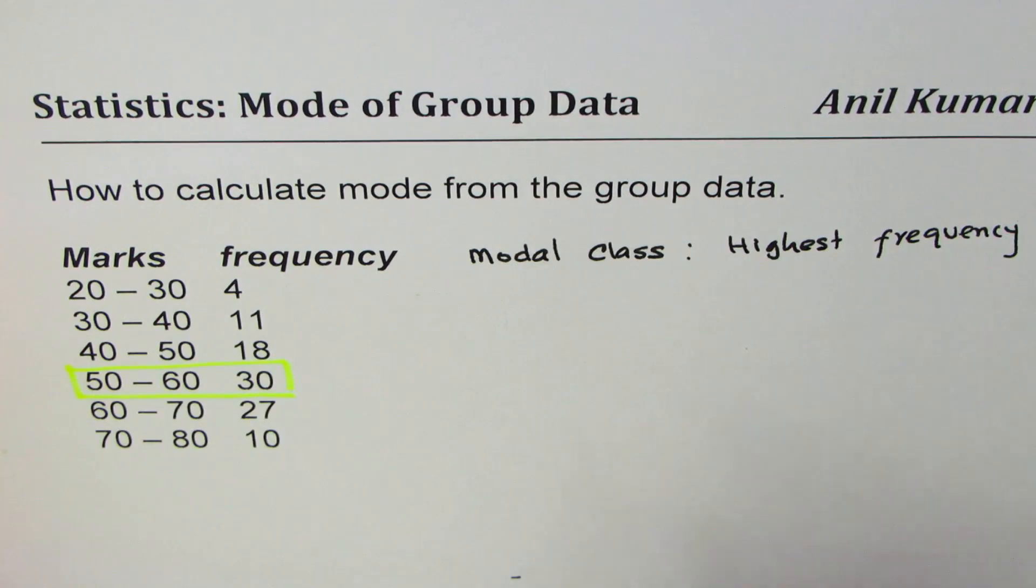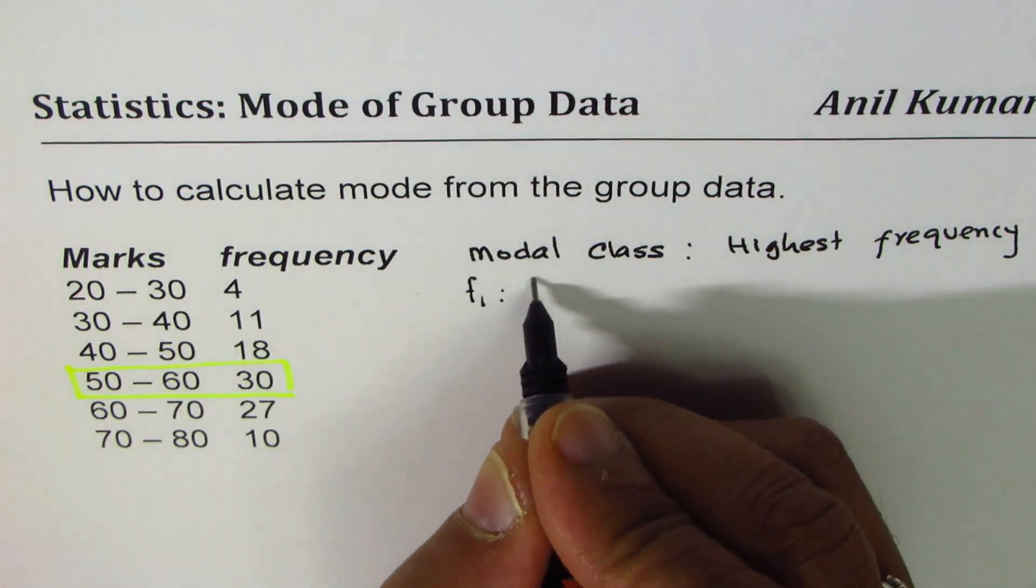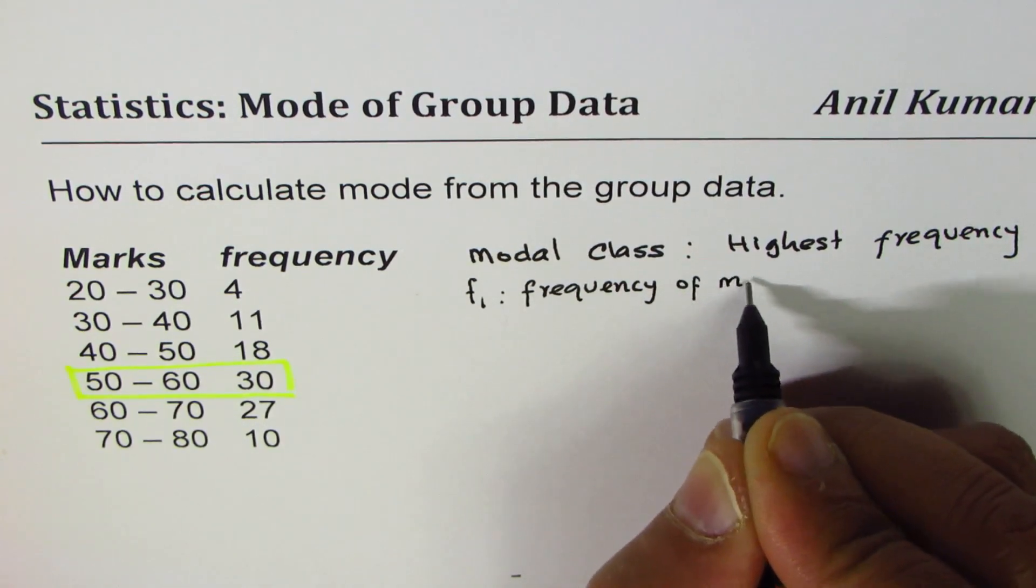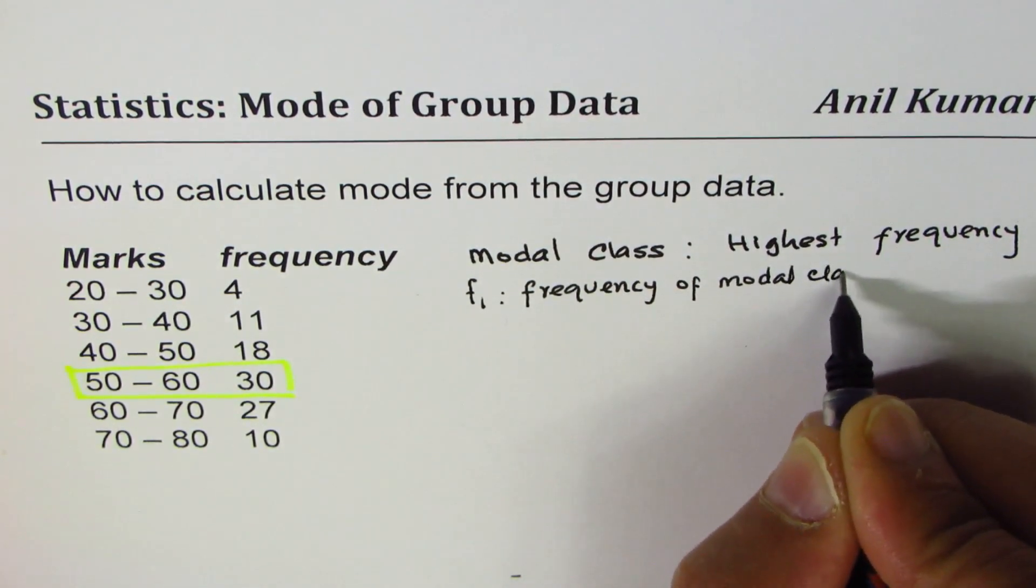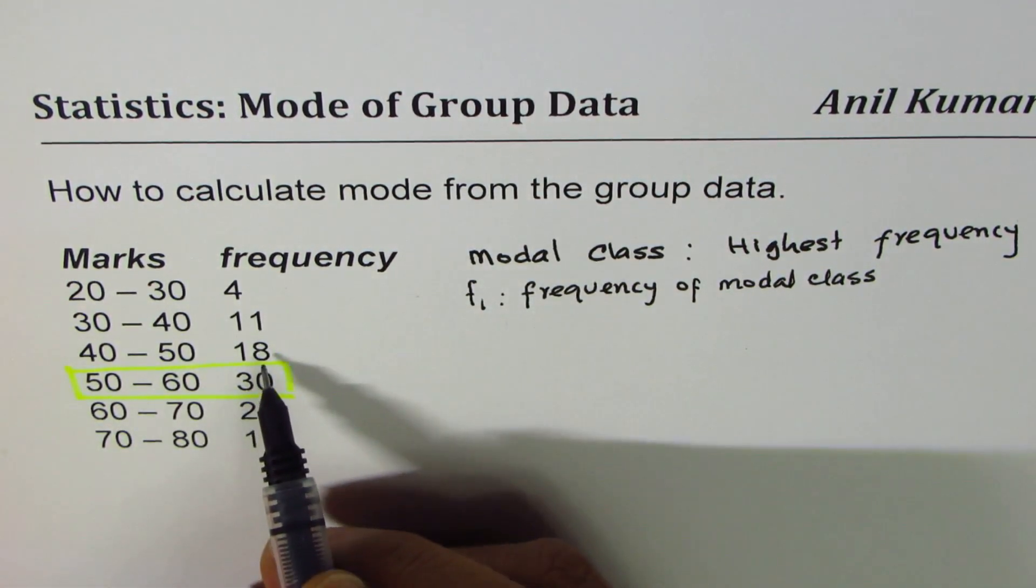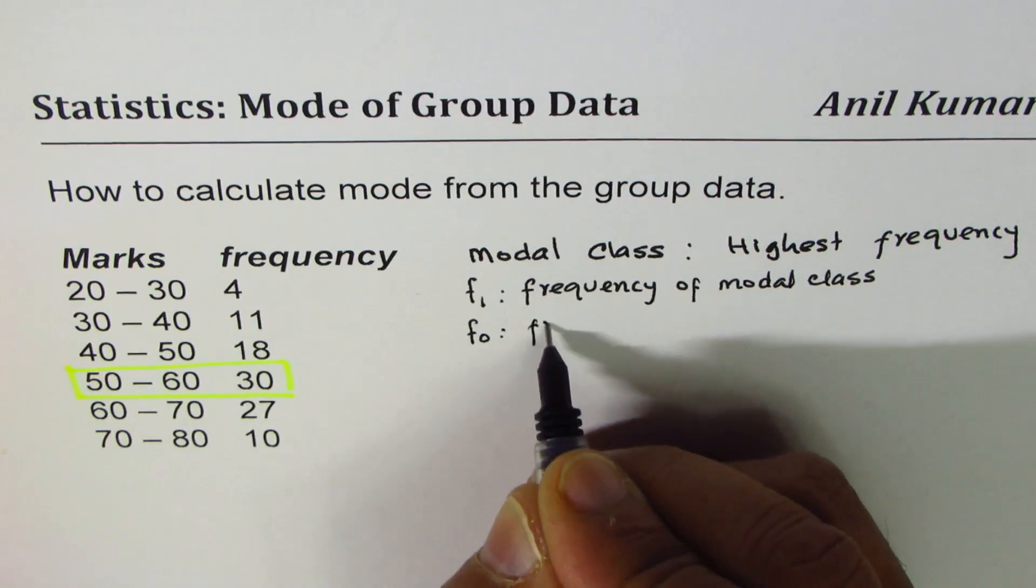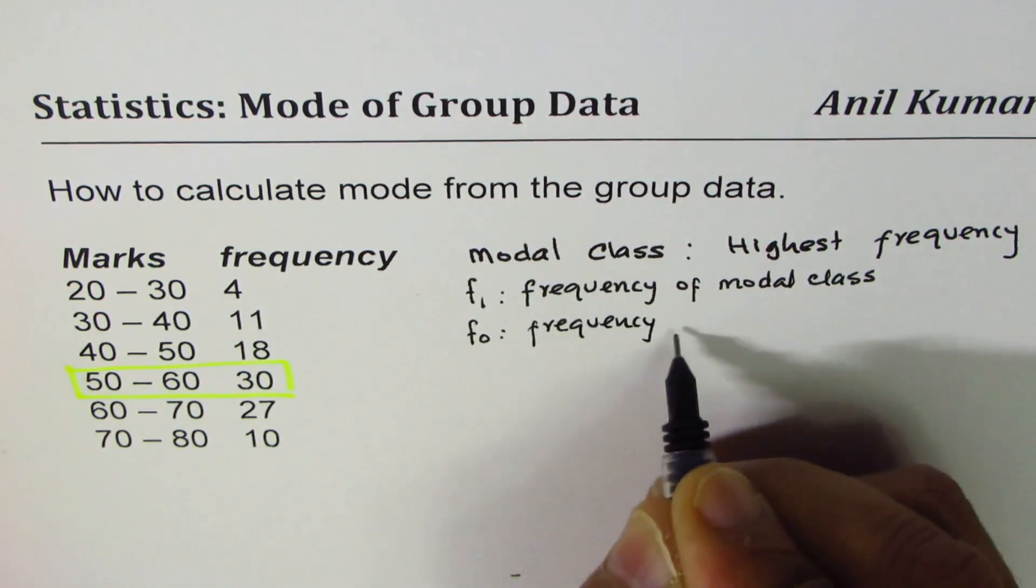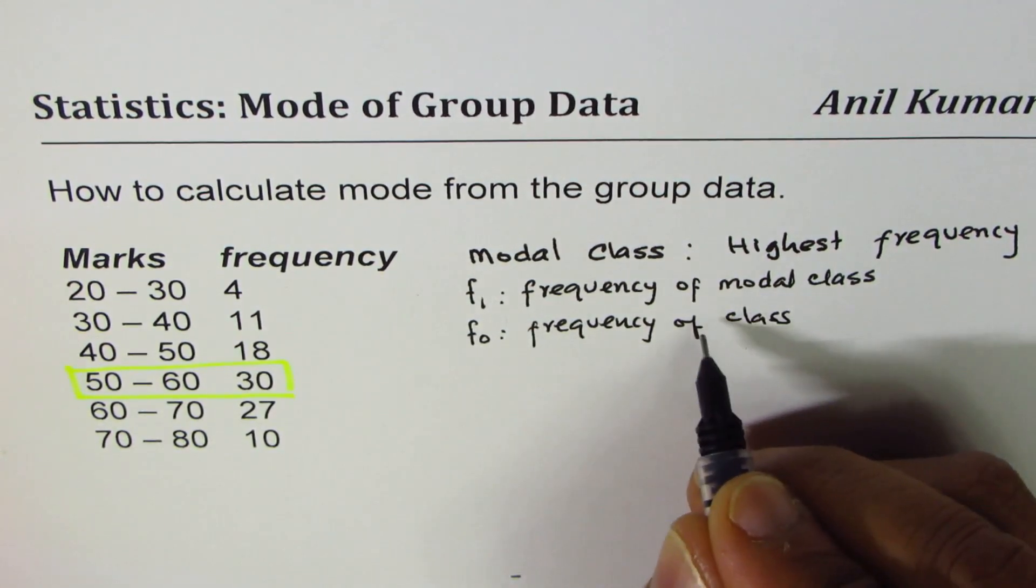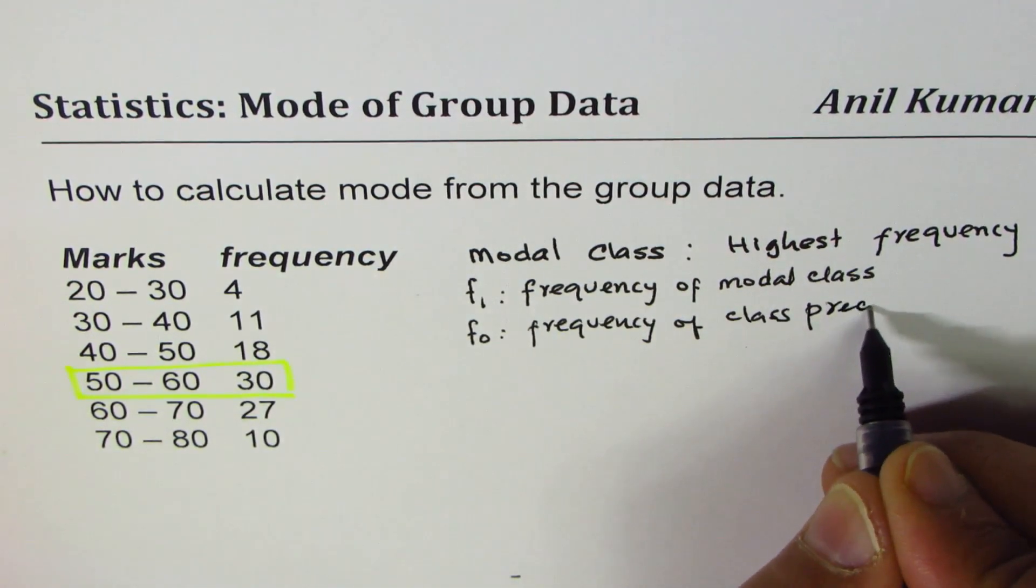This frequency we call as f1, which is the frequency of modal class. Now the frequency which is before the modal class we'll call this as f0, which is frequency of class preceding.